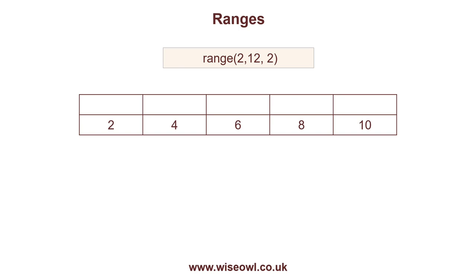We've already seen a range in a previous tutorial. For example, this one at the top of the screen begins with the number 2 and carries on up to, but not including, 12, going up by 2 each time — so it goes 2, 4, 6, 8, 10. If I wanted to number these as items in my sequence, it follows exactly the same rules as a list and a tuple. So for example, if I refer to the third item, I'm going to pick out the number 8.